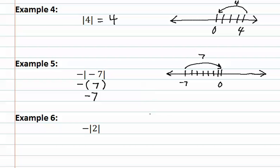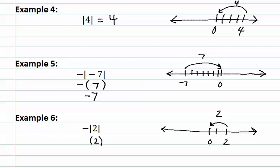In example six, we have the opposite of the absolute value of two. Using a number line, we see that two is a distance of two units from zero, meaning the absolute value of two is two. Placing this into parentheses, we see it is now asking: what is the opposite of two? The opposite of two would be negative two.